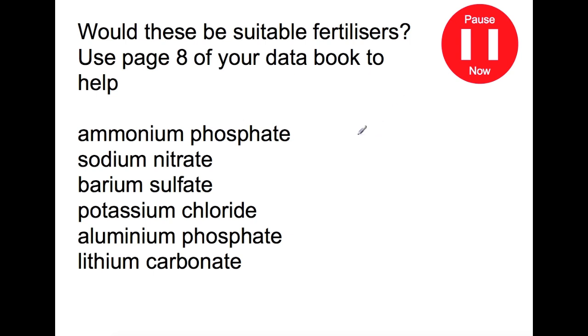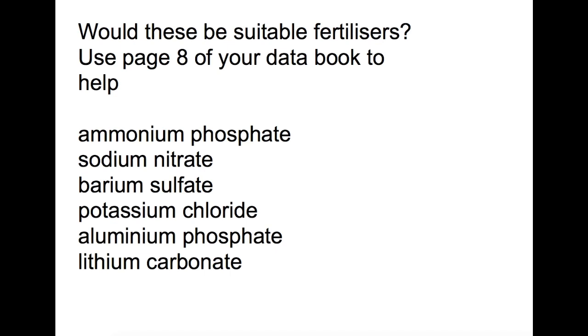Page 8 of the data book is the page which allows you to know if something is soluble or not. You can use other pages in the data book to work out what elements are present in each of these compounds. First of all, we have ammonium phosphate. This contains both nitrogen and phosphorus and is soluble, so would make a good fertilizer.